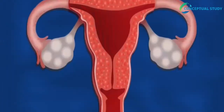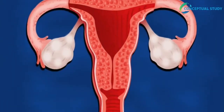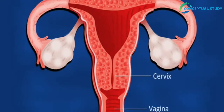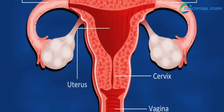The reproductive organs of females are affected by female hormones. These organs include the vagina, cervix, uterus, fallopian tubes, and ovaries.